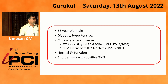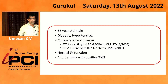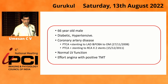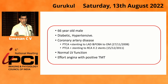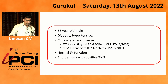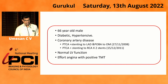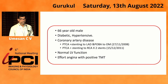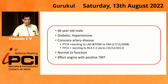This is the story of a 66-year-old male who is diabetic and hypertensive. He was diagnosed with coronary artery disease in 2008. In November 2008, he had a PTCI with stenting to the left anterior descending artery and a POBA to the obtuse marginal.